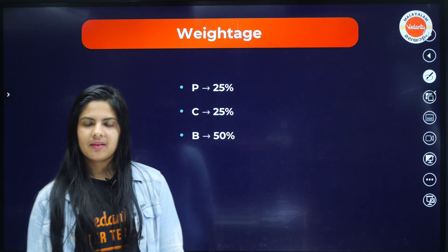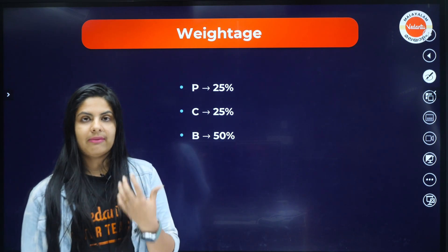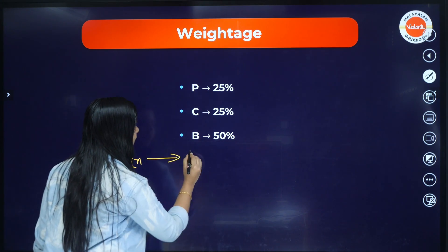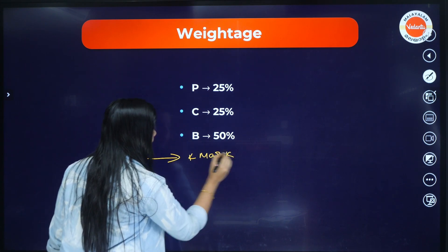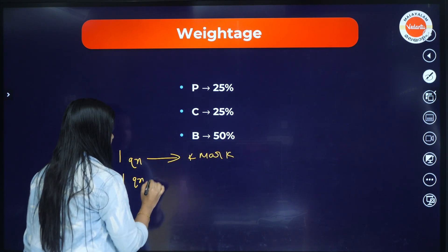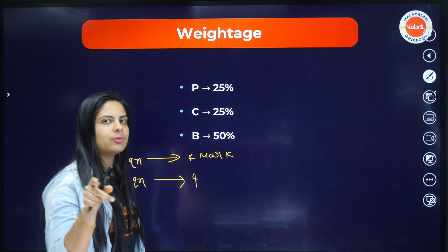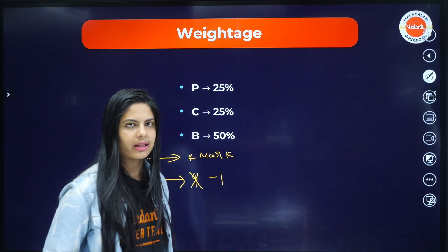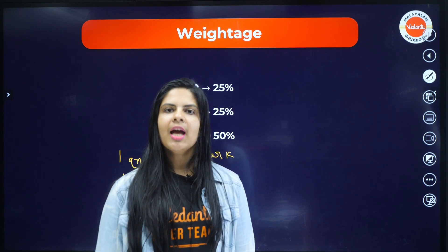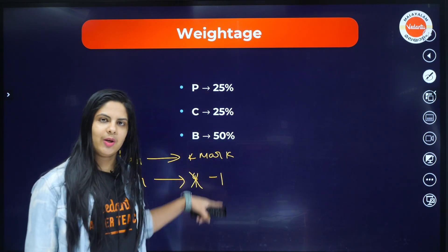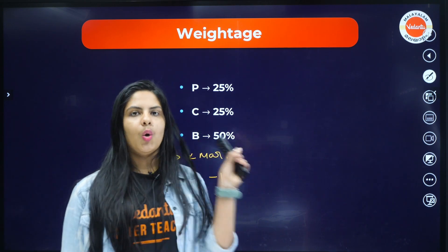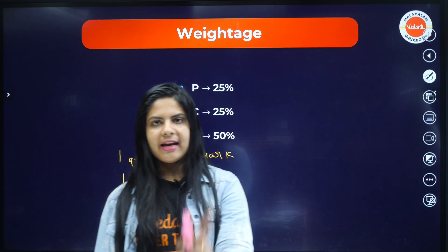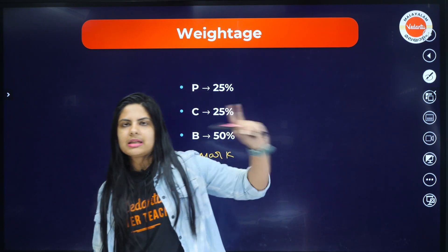The total mark is 720. One question carries 4 marks. If you get a wrong answer, there is a minus 1 mark — that is the negative marking. If you do not attempt a question, there is 0 — no negative mark for unattempted questions. So if you are confident, attempt the question; otherwise leave it.